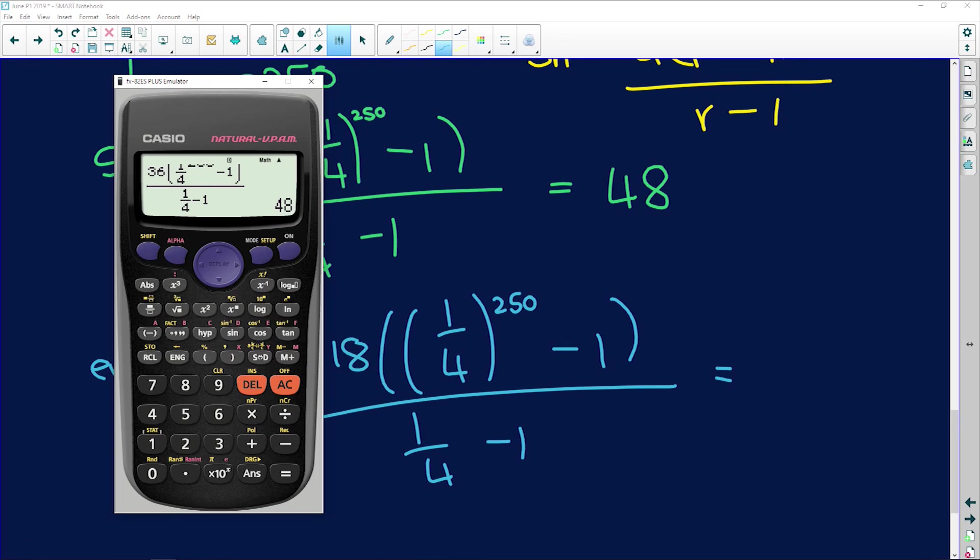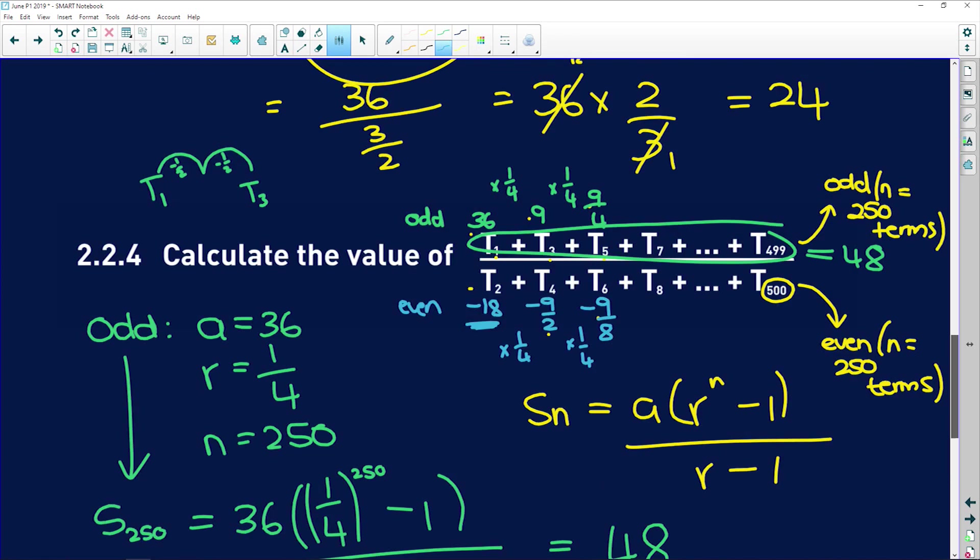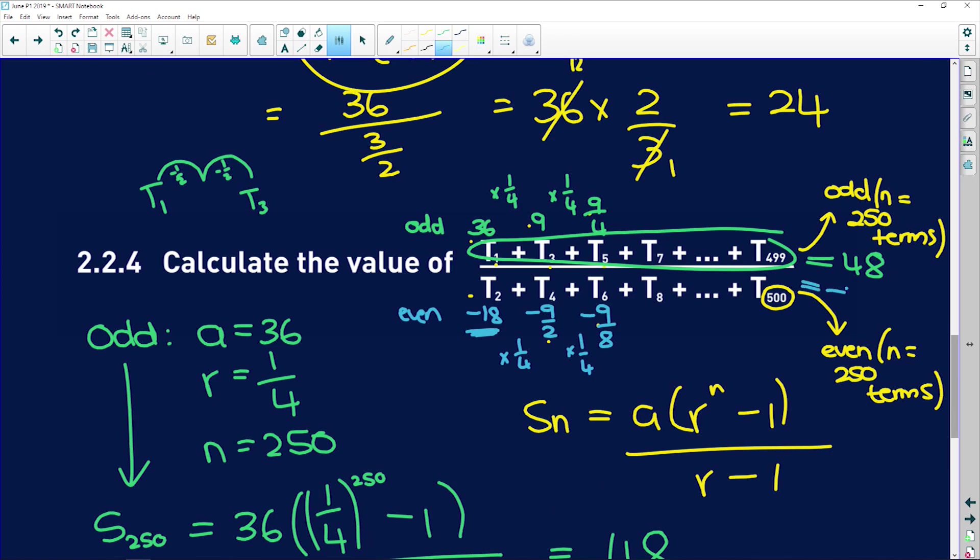And that is going to give us, well, if you see, it's pretty much the same equation, just that a has changed. So I'm going to delete that 36 and put in negative 18. And I'm going to get negative 24. So that is the denominator.